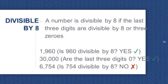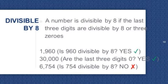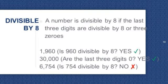Divisible by 8. A number is divisible by 8 if the last 3 digits are divisible by 8, or the last 3 digits are 3 zeros. Let's take a look at these examples. 1,960 — the last 3 digits are 960. Is 960 divisible by 8? Yes, so 1,960 is divisible by 8. Next, 30,000 — the last 3 digits are zeros, so 30,000 is divisible by 8. 6,754 — is 754 divisible by 8? No, so 6,754 is not divisible by 8.